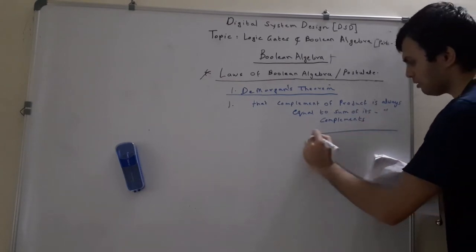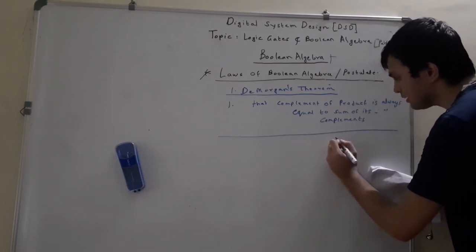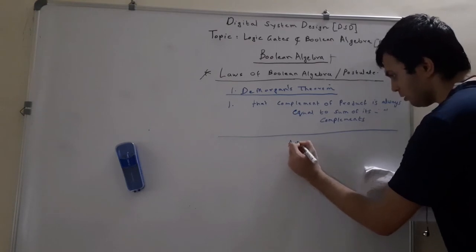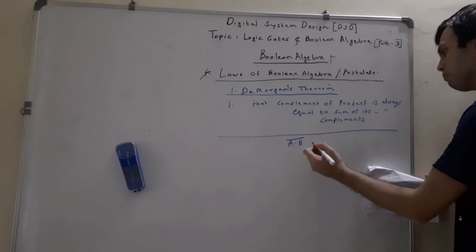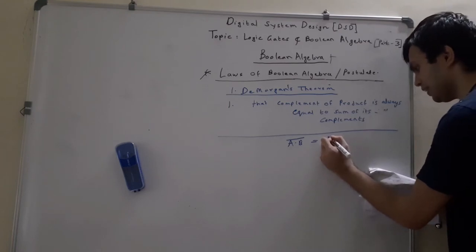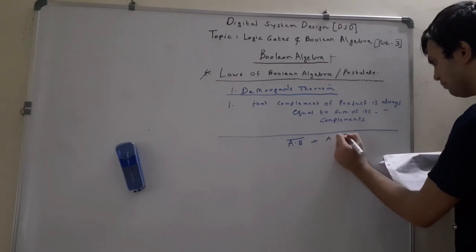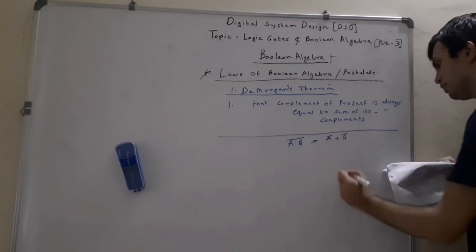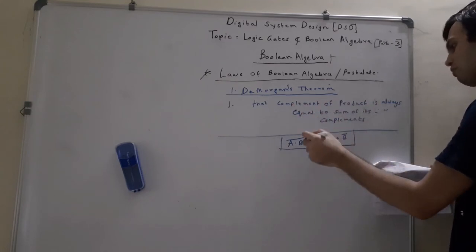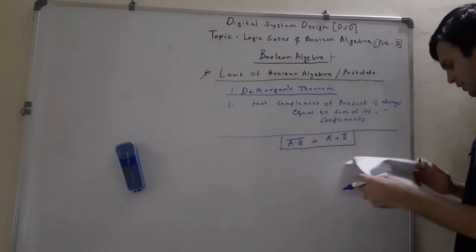To understand what this theorem statement means, we state it in terms of a Boolean expression. Complement of product means A dot B, the whole complement. This is equal to the sum of the individual complements, that is Ā plus B̄. So the complement of product is equivalent to the sum of its individual complements.